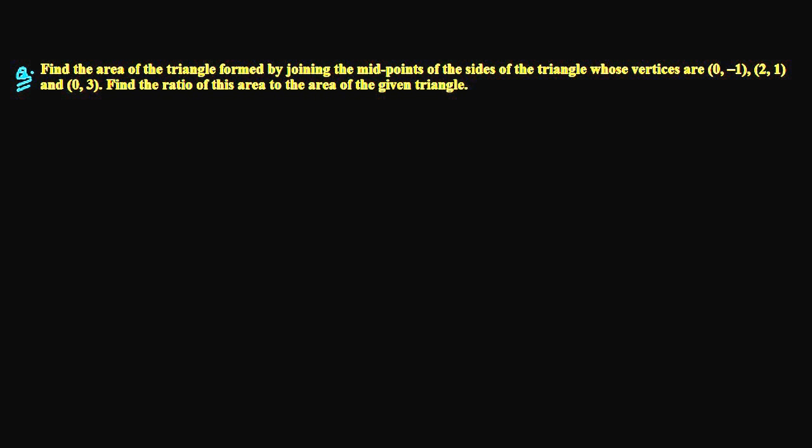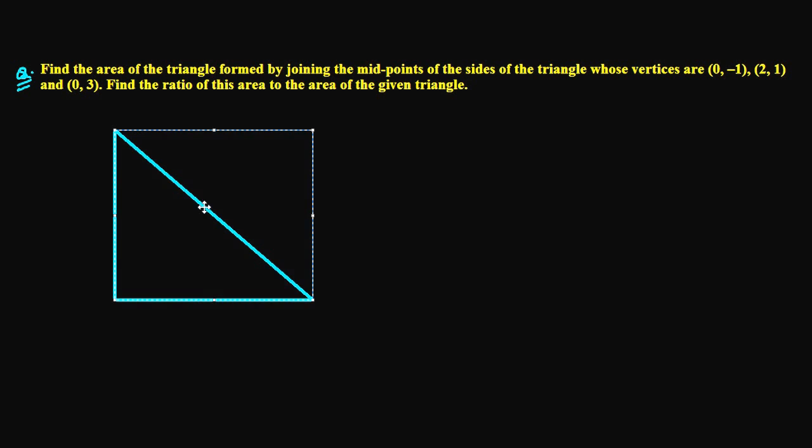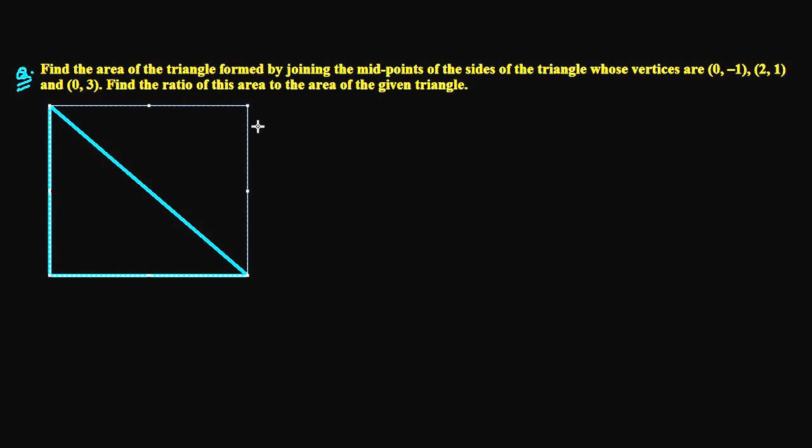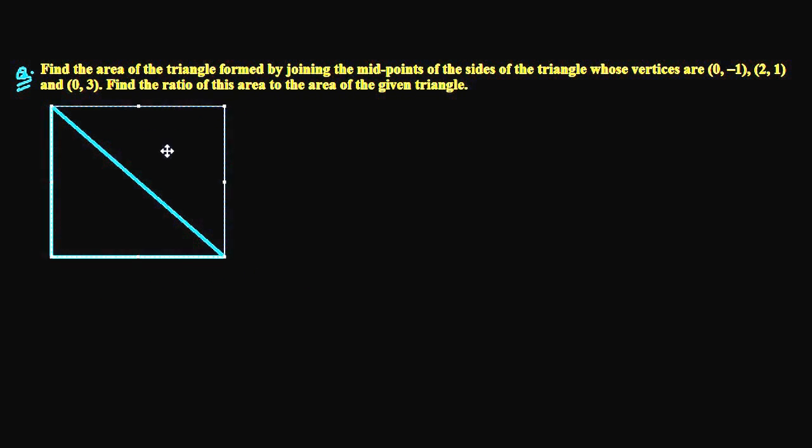So the question is something like this. We have a triangle. Any kind of triangle - they are not specifying which type. So suppose this is our triangle. What the question is saying actually is joining the midpoints of this - let me suppose the midpoint of this side is here, the midpoint is this one, and the midpoint is this one.